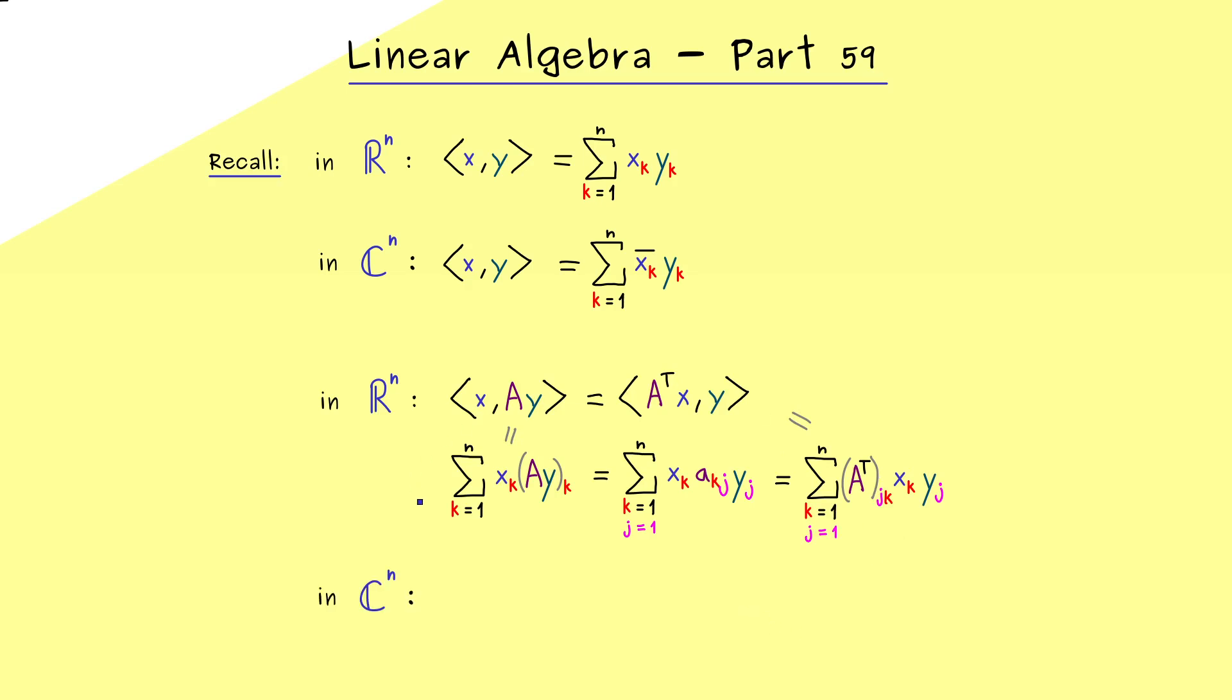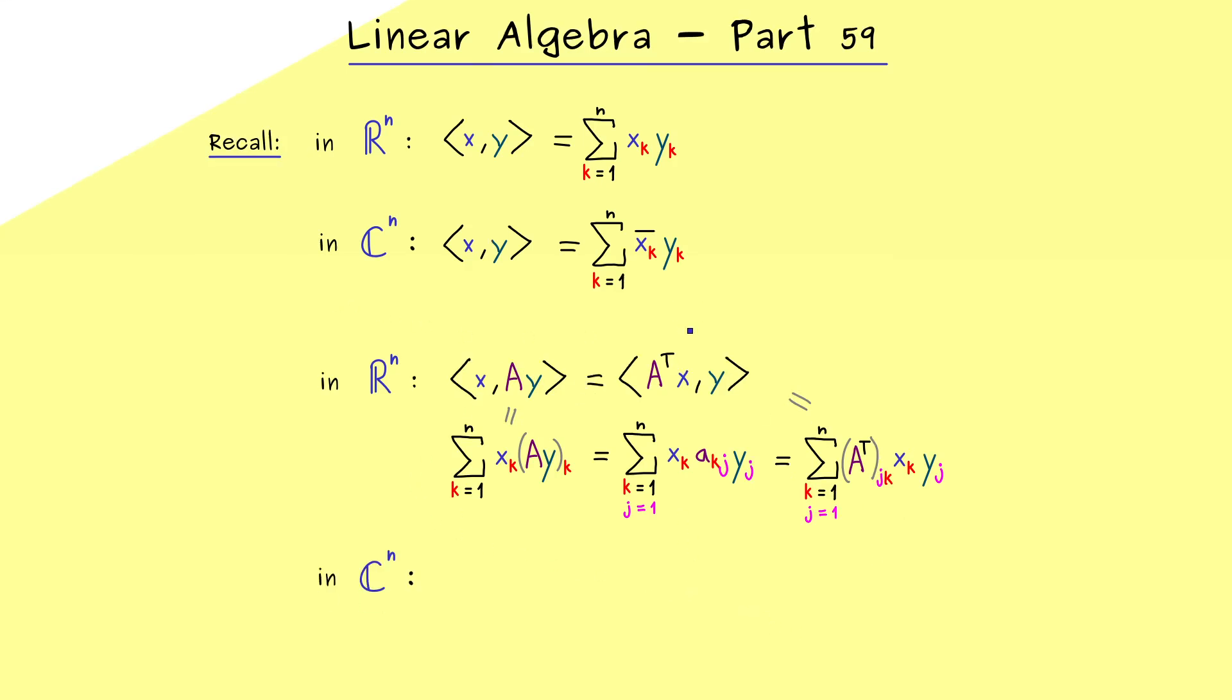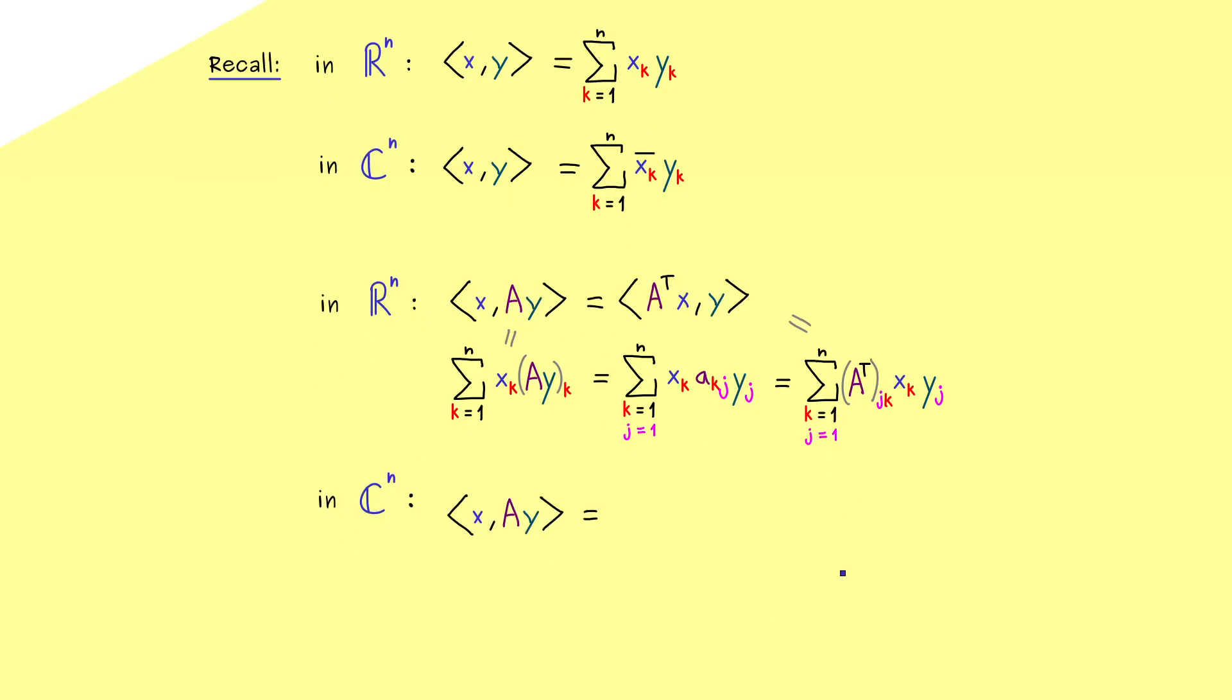Okay, and now the natural question is of course, can we do the same in C^n now? And obviously, this should not be a problem, because we can write down a similar calculation as before. The only difference here is that now the components of x have a complex conjugation. And we immediately see, that does not change anything with the matrix vector product with the vector y here.